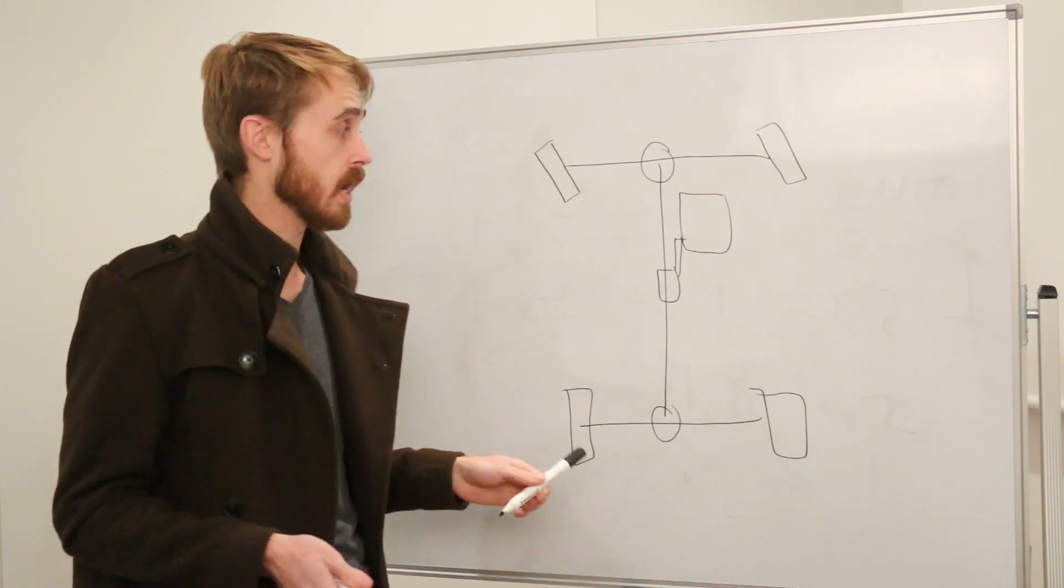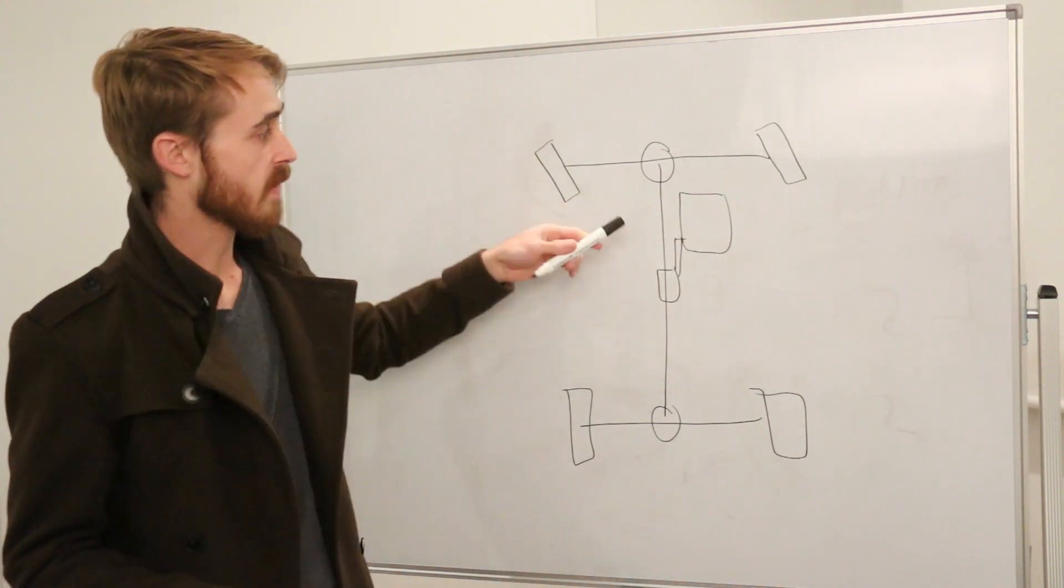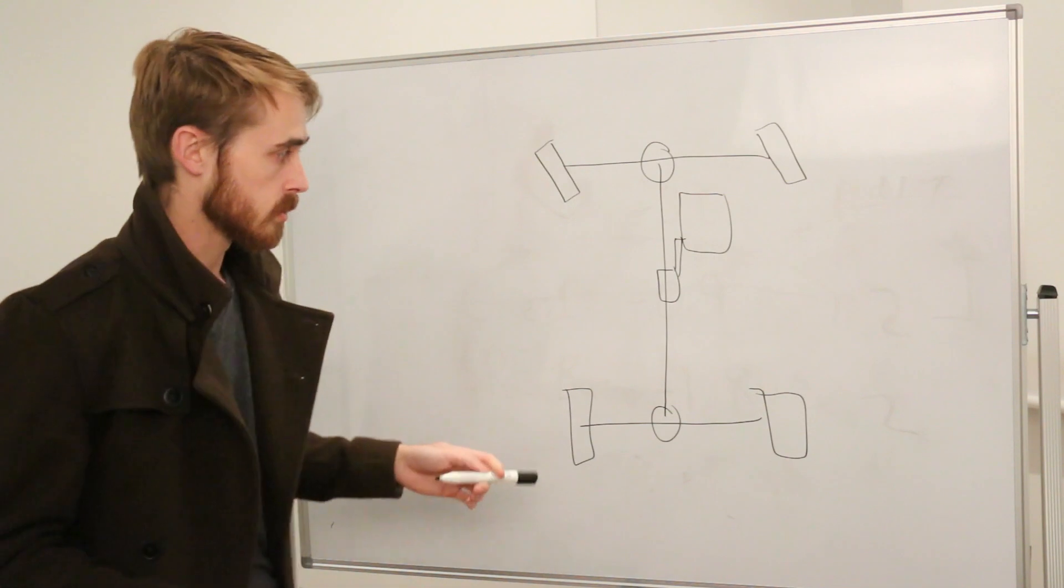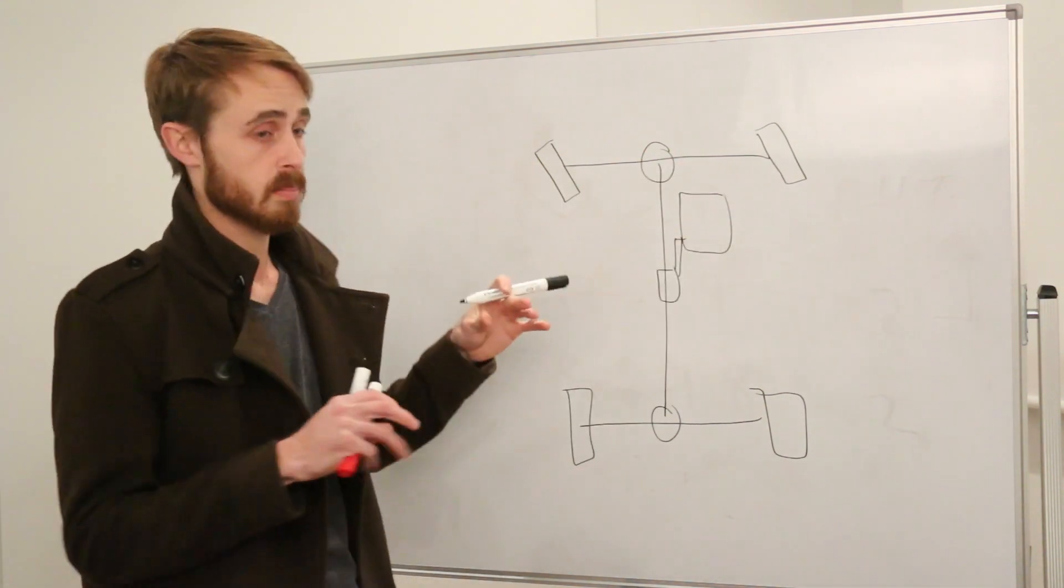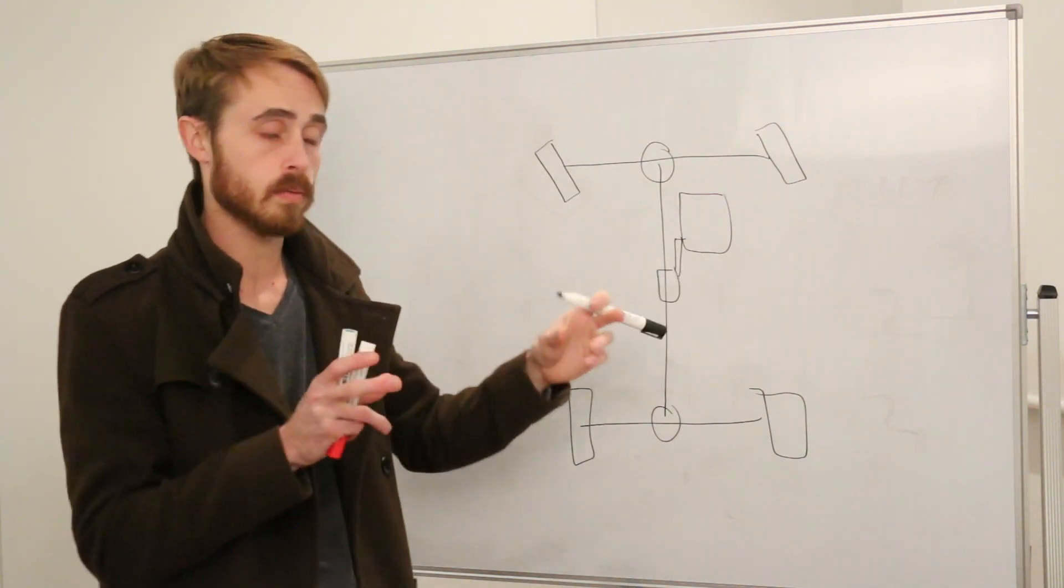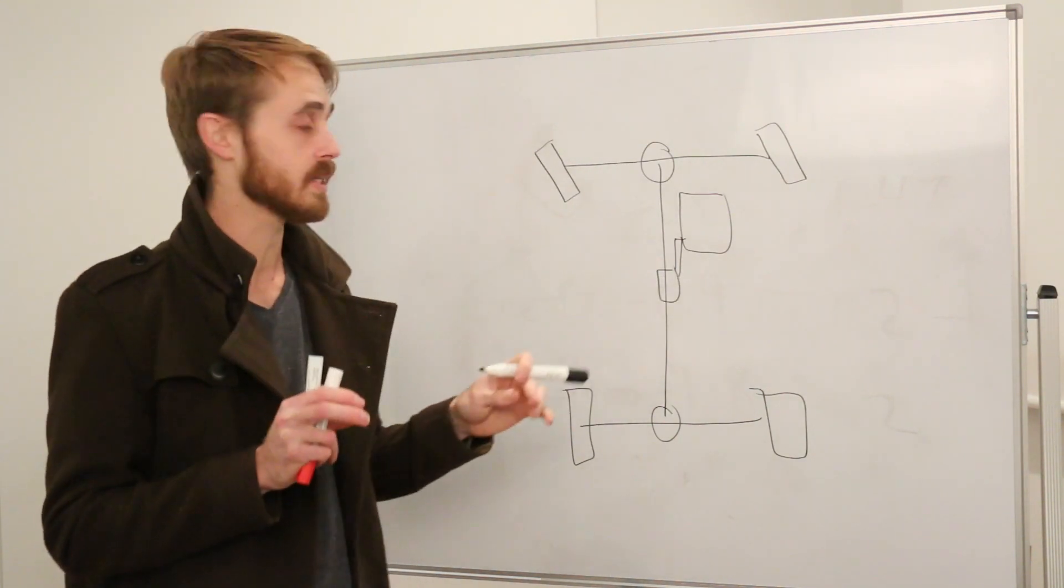So in a typical all-wheel drive car, you have the engine providing power to the front and the rear wheels. Now the front and the rear wheels can have different degrees of slip on them. When you go around a corner, the front will want to rotate at a slightly different rate to the rear.